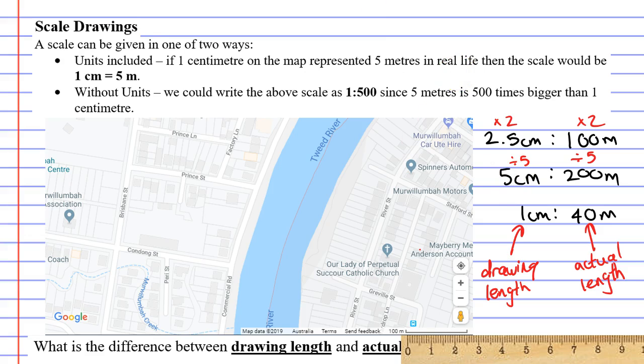Now we have two types of scales that you might see on a map. You have ones where the units are included. So our 1 centimeter which represents 40 meters includes units. It includes the centimeters and it includes the meters.